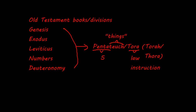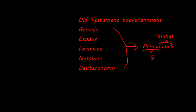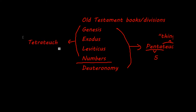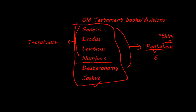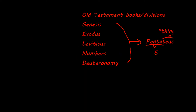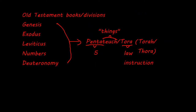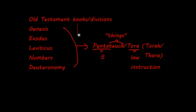Some scholars would say that the first four books have more in common with each other than they do with the book of Deuteronomy, so they would take Deuteronomy out and call it the Tetrateuch, meaning the four things. Other scholars would like to include the book of Joshua, calling it the Hexateuch. However, I won't be dealing with this much right now — I'll just be talking about the Pentateuch.